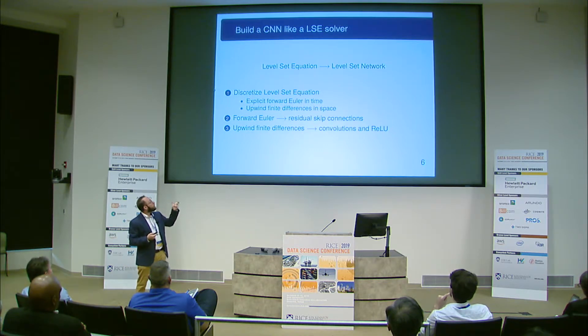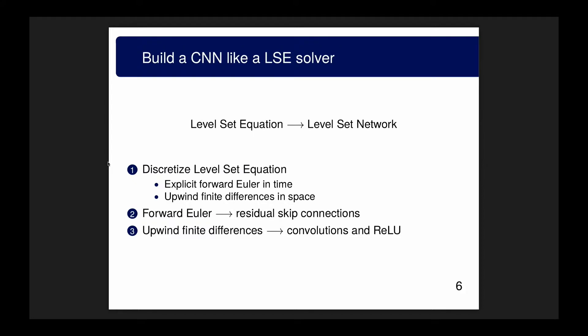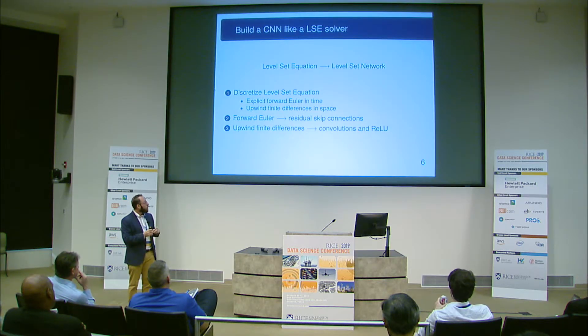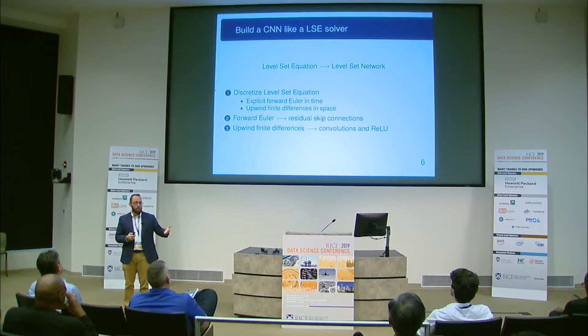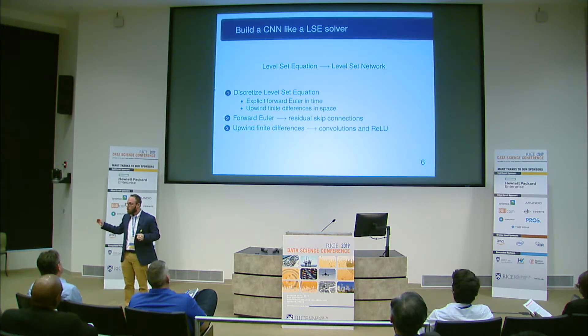So can we exploit these similarities to construct a network we can actually analyze, just like the level set equation? That's what we aim to do. We call our result a level set network. We discretize our PDE and make approximations that allow us to represent it as a convolutional neural network. An explicit Euler forward time step gives us skip connections — residual connections — across the network. The upwind finite difference scheme gives us our layers, activation functions, and convolutions. We substitute out the finite difference kernels and instead learn the optimal kernels.